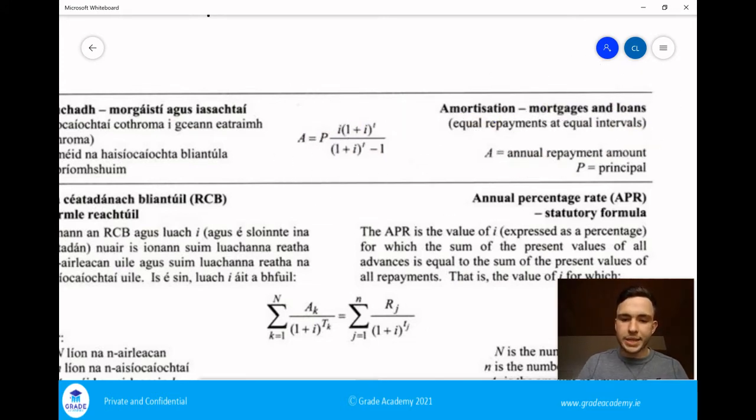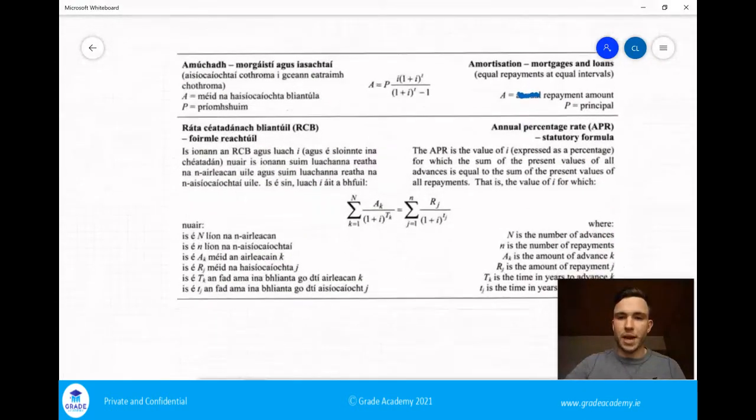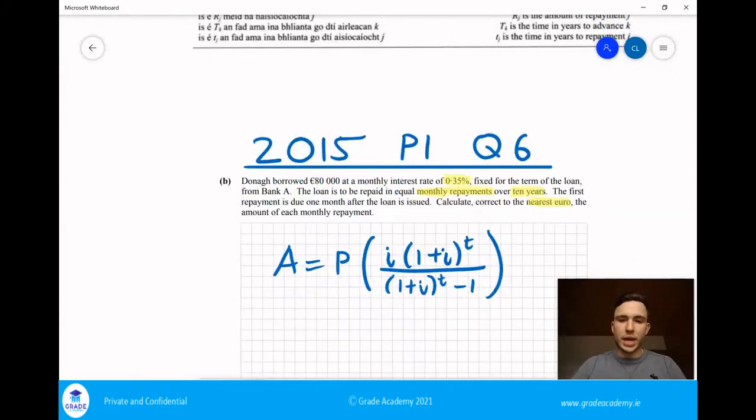It says that A is equal to the annual repayment amount. In your head, I just want you to almost cross off the word annual, because it can be used if you're paying off something every month, every week. So A is just the repayment amount, and P is the principal. So what does that mean? Well, that's the amount that we borrowed.